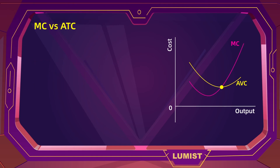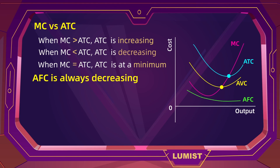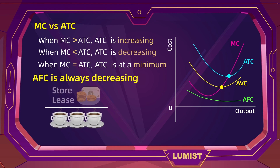Next is average total cost, which is just average variable cost plus a fixed amount — the average fixed cost. So the curve will look identical to average variable cost, but just a little bit higher, and it follows the same principles as AVC when compared to marginal cost: it falls until the marginal cost intersects it, and then it rises. Lastly, average fixed cost is just the fixed amount that decreases as more units are produced. For example, as a coffee shop produces and sells more coffee, they can divide their store's lease cost over more and more units, and it gets closer and closer to zero, but actually never reaches it.